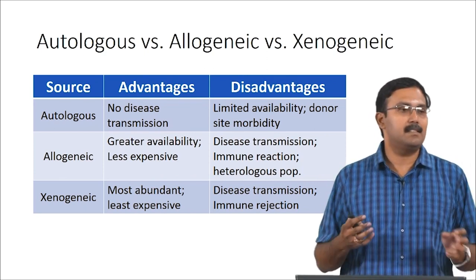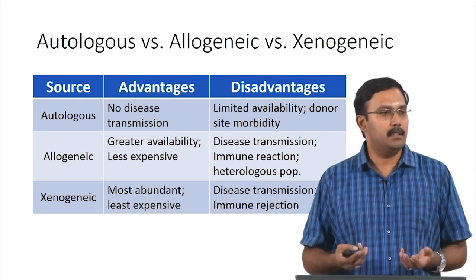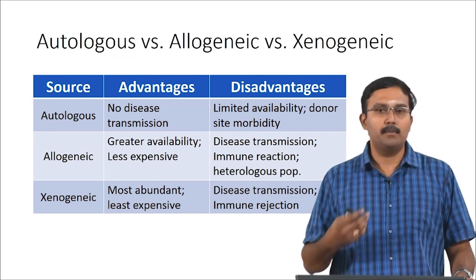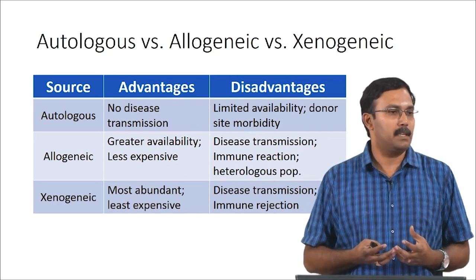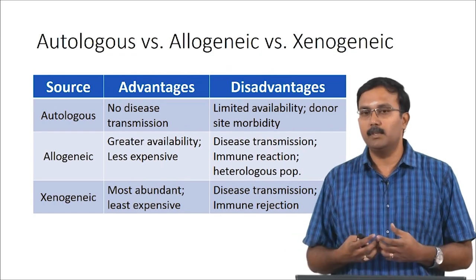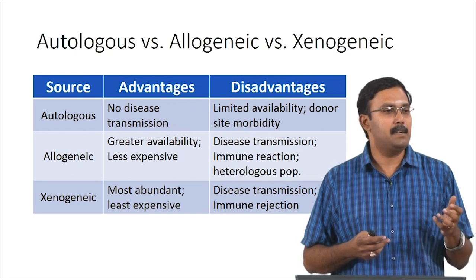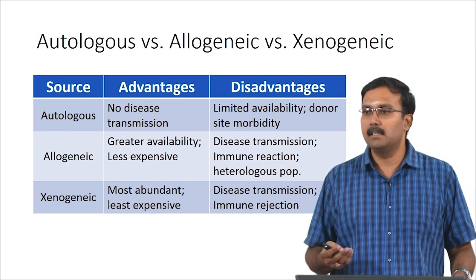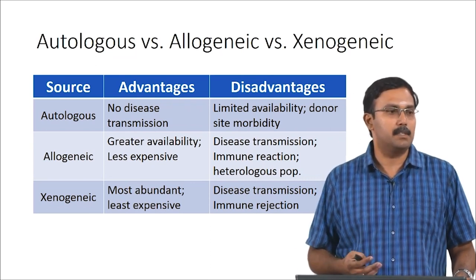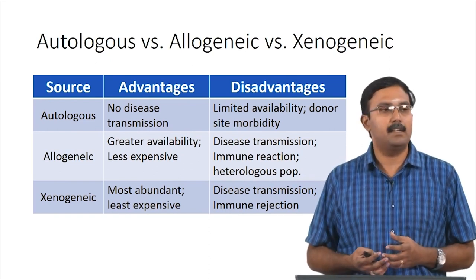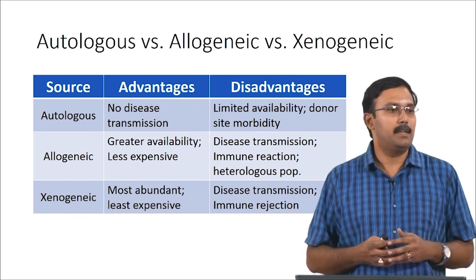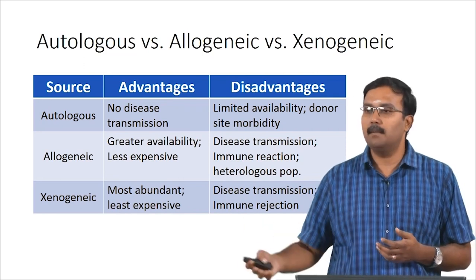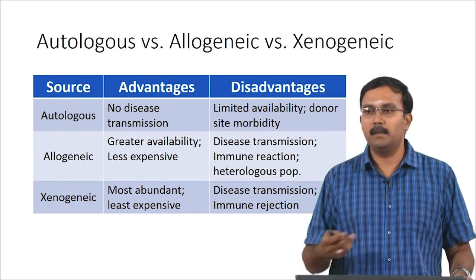The disadvantages of autologous cells are limited availability and injury to the harvest site. Allogenic cells have greater availability and are less expensive; however, there is risk of immune rejection, disease transmission, and a heterologous population when using cells from another individual. Xenogenic cells are from other species, which means they are the most abundant and the least expensive — you can get them from organisms grown specifically for harvesting — but there is a much higher risk of disease transmission and immune rejection.